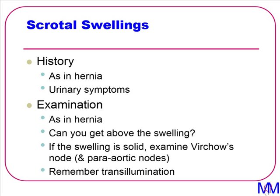On to examination. Again, it is as in a hernia, so on inspection we use the seven S's: site, size, shape, symmetry, surface, skin overlying, and scars. Then we can look for any special signs. Without even touching the patient, we could ask them to cough and observe if the lump enlarges or not.